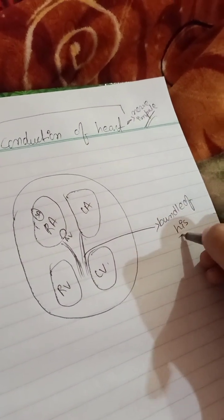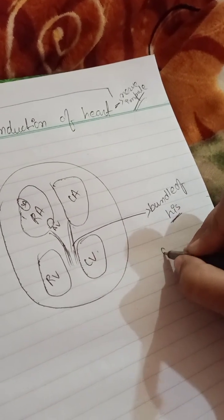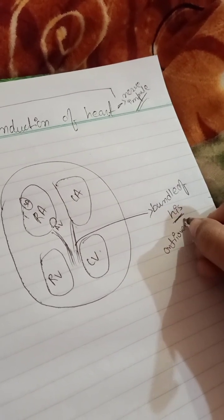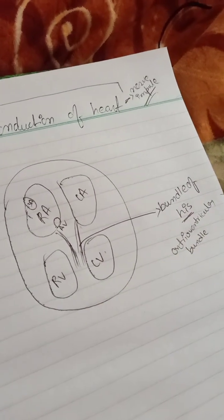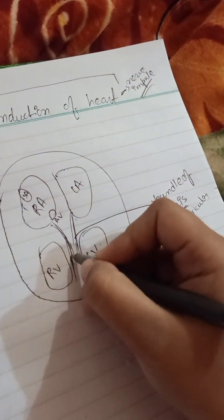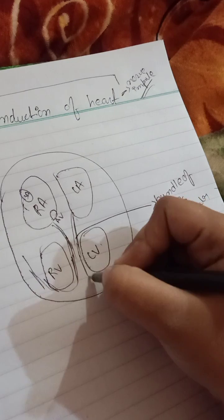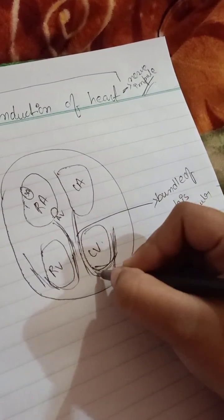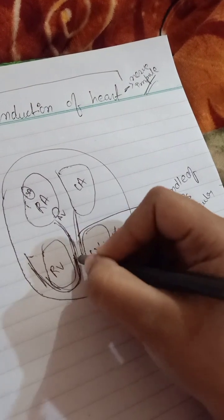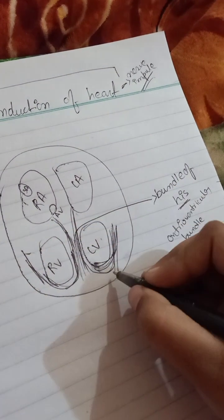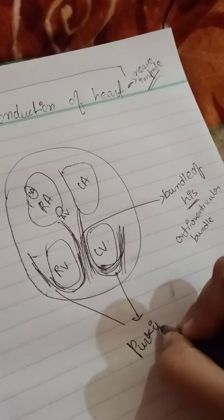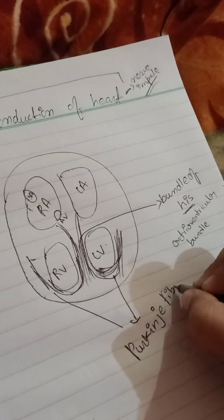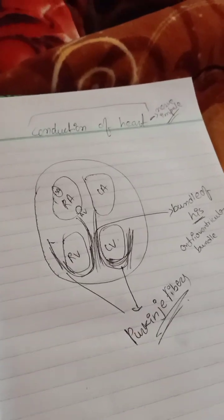The third component is the fiber-like structure called the Bundle of His, also called the atrioventricular bundle. The fourth component is the nerve fibers called the Purkinje fibers.